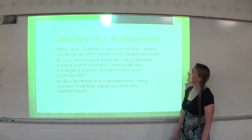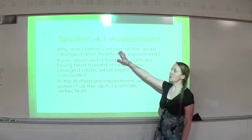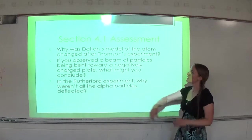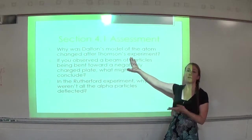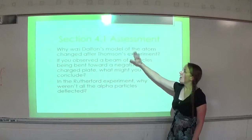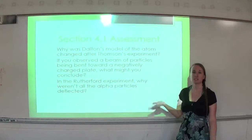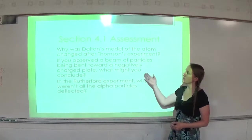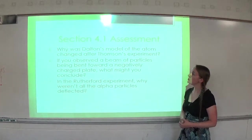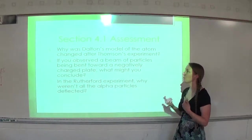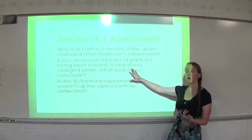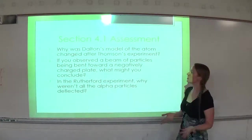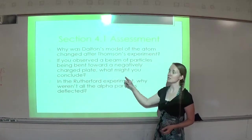Question five: why was Dalton's model of the atom changed after Thomson's experiment? Dalton's model was just a solid sphere. Once Thomson discovered electrons, we had to somehow put electrons in there — the atom itself was actually made of smaller particles. Question six: if you observed a beam of particles that bent toward a negatively charged plate, what might you conclude? Since opposites attract, if something's attracted to a negative plate, it must be positively charged — the beam of particles is positively charged.